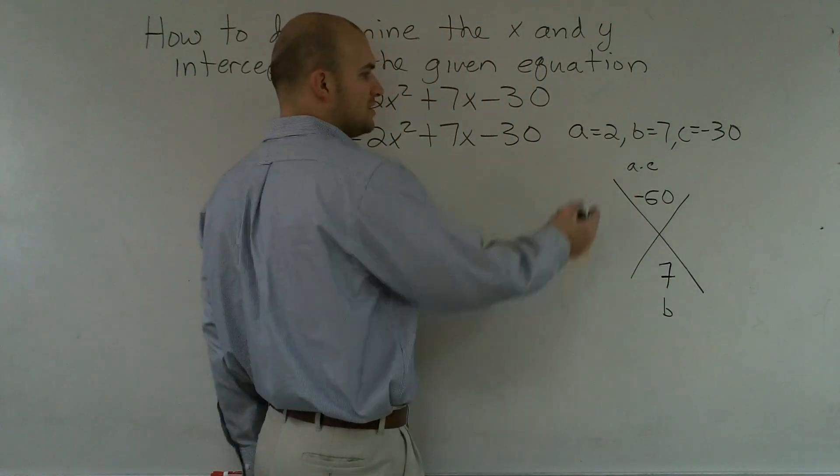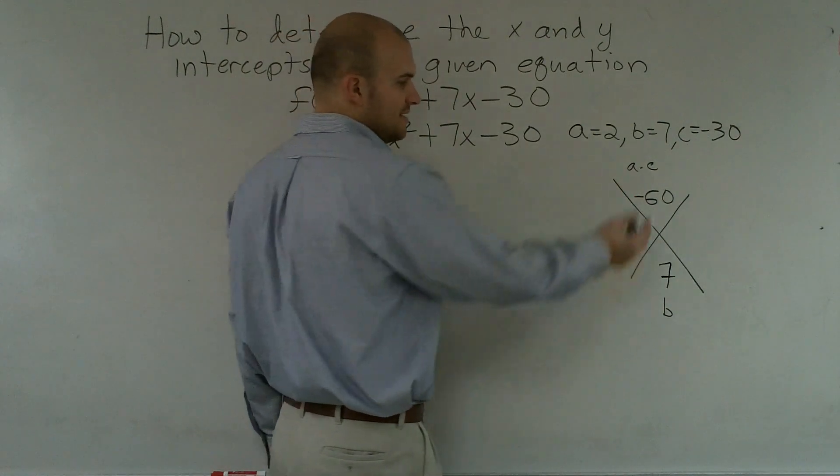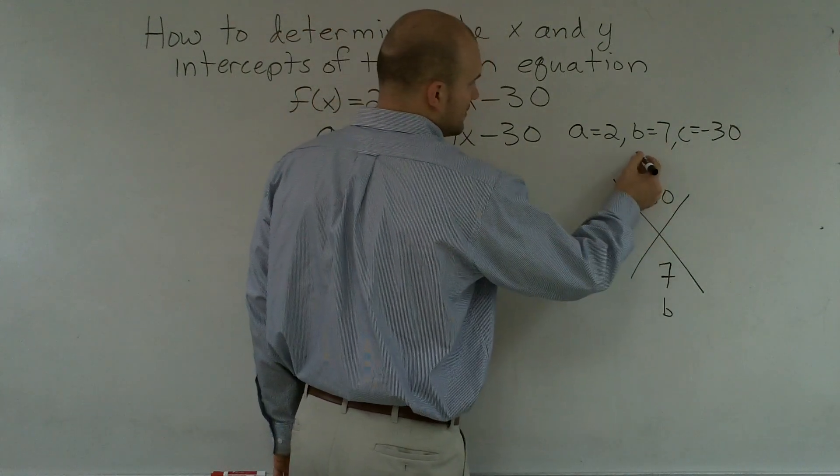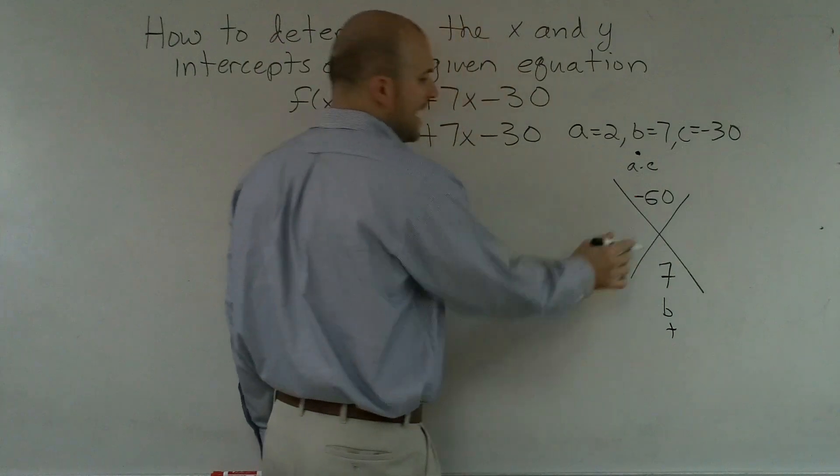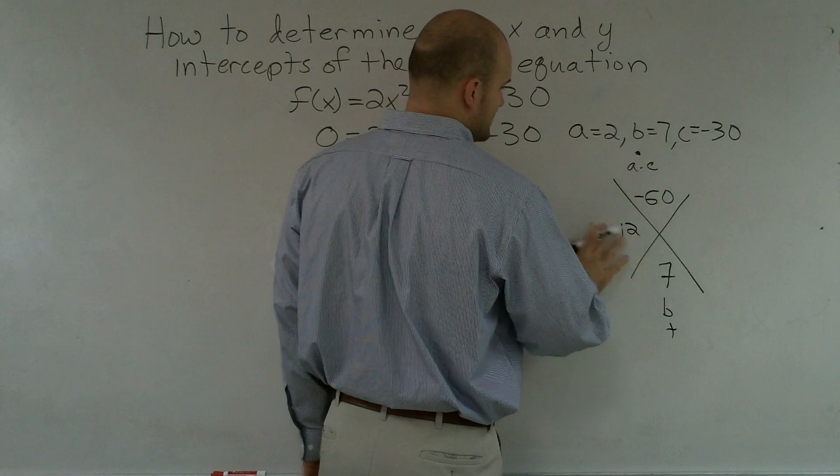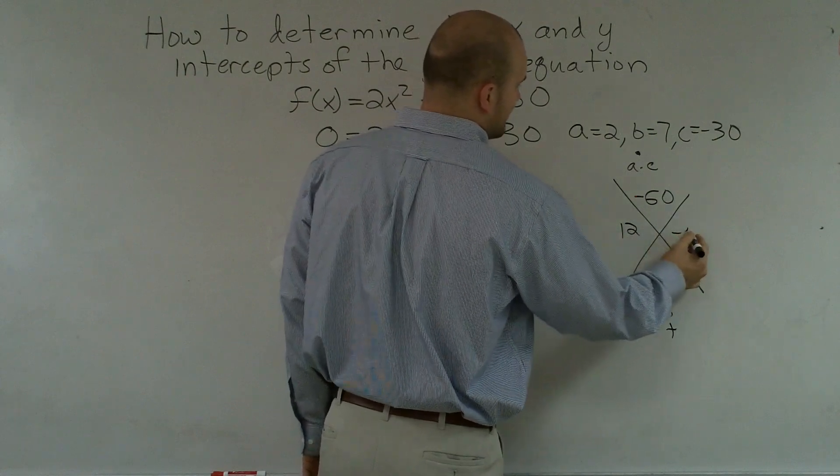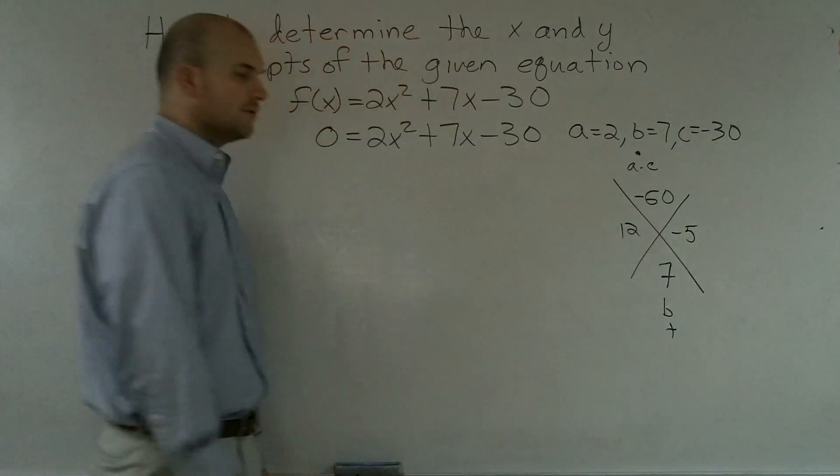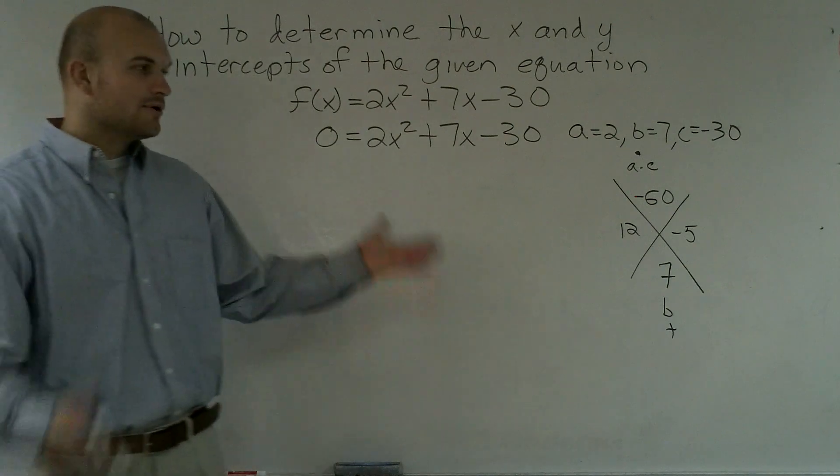And what we determine is, what two numbers are going to multiply to give you negative 60, but add to give you 7. And we go and look at that and we say, it's going to be positive 12 and negative 5.